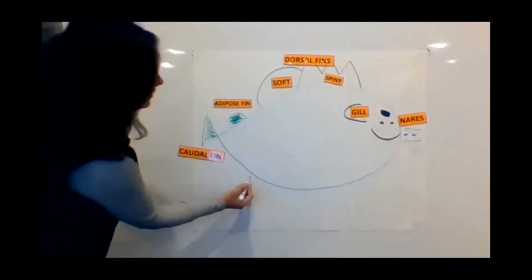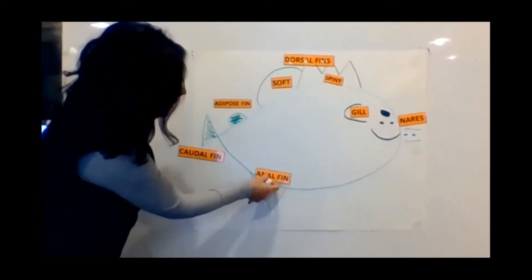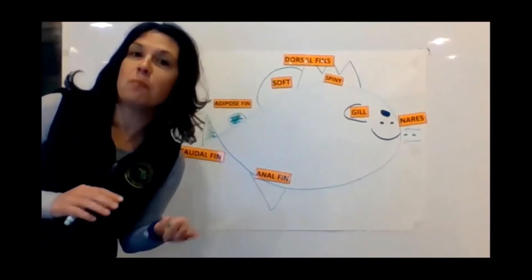We're going to give it another fin down here. This is called the anal fin. And this operates similar to the soft dorsal fin in that it gives the fish balance in the water.